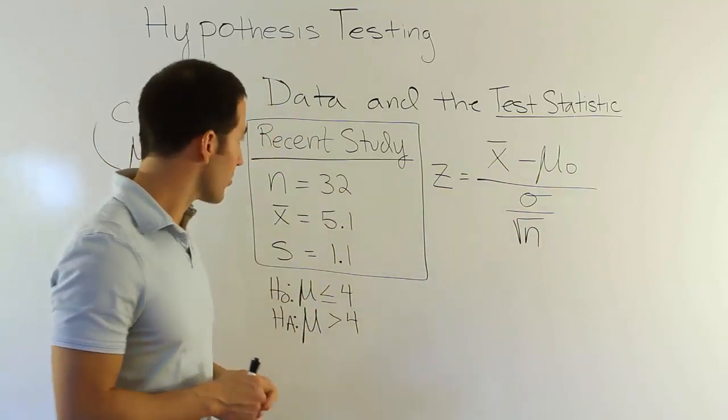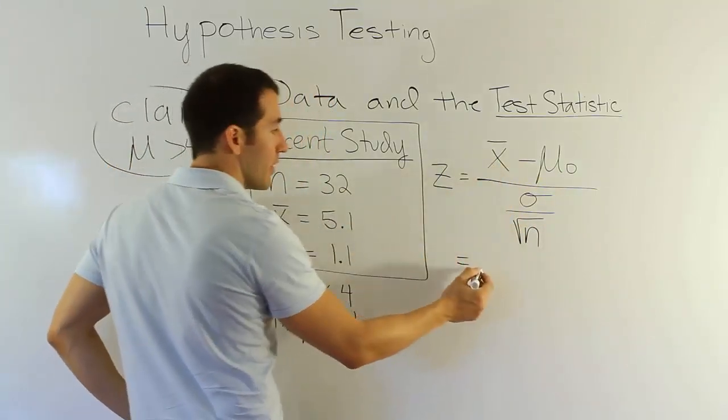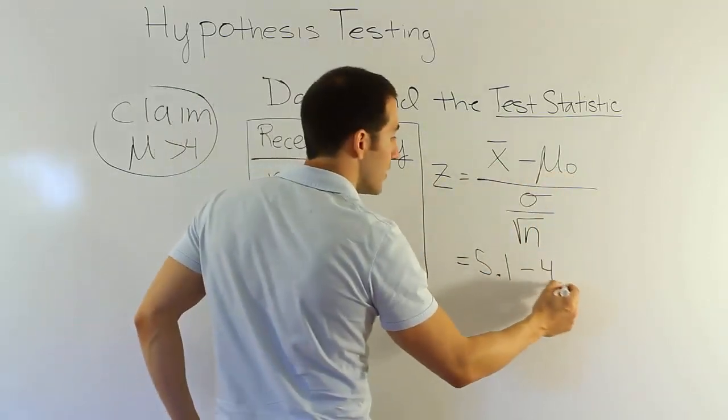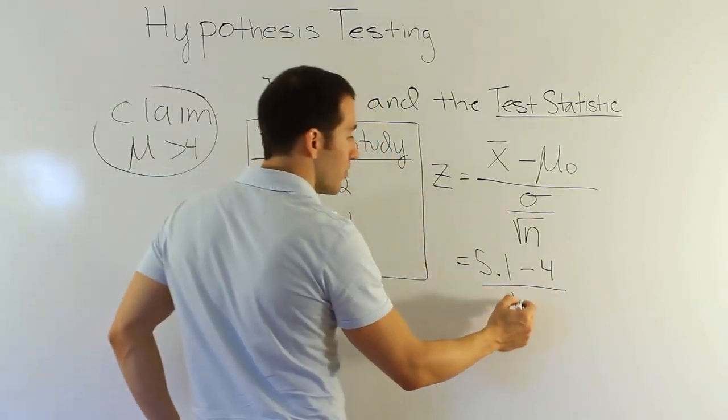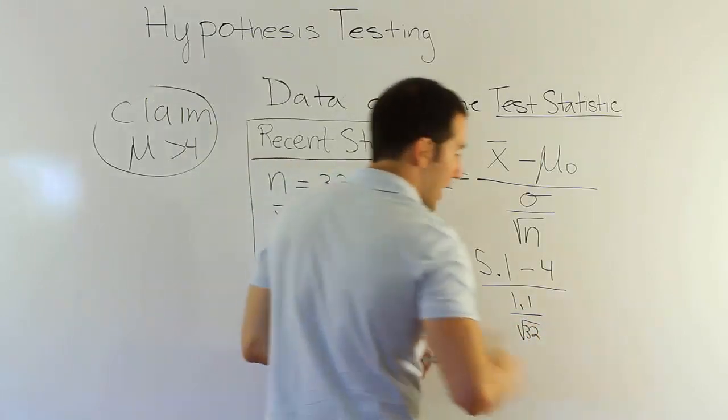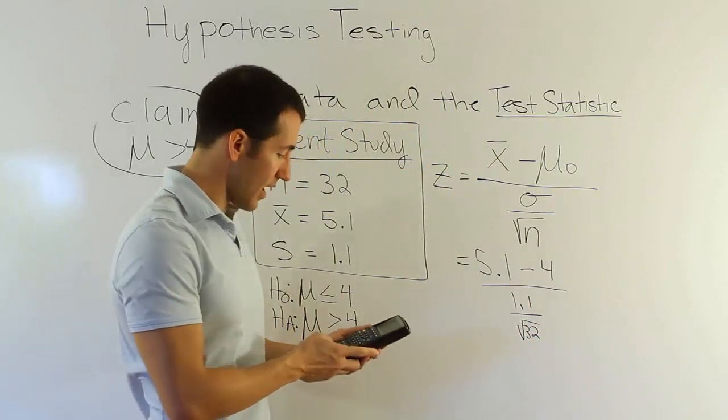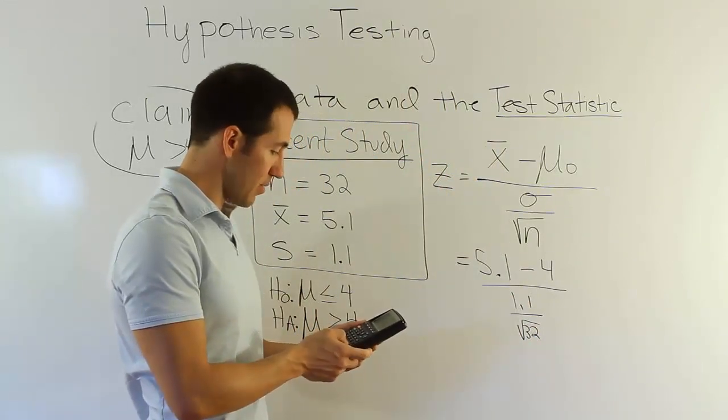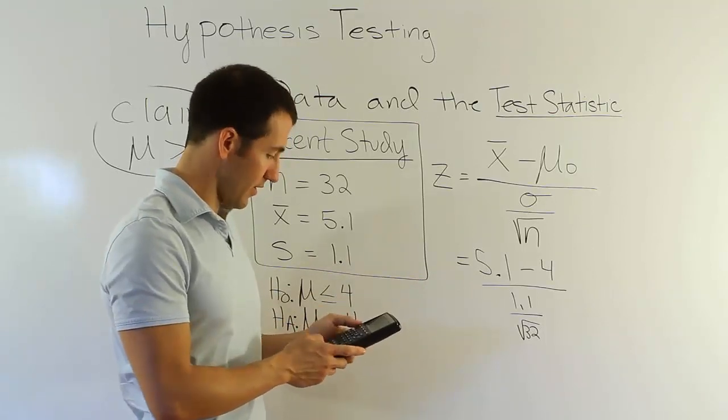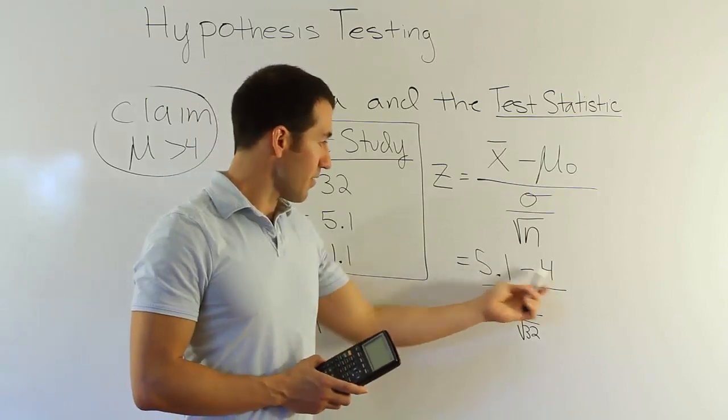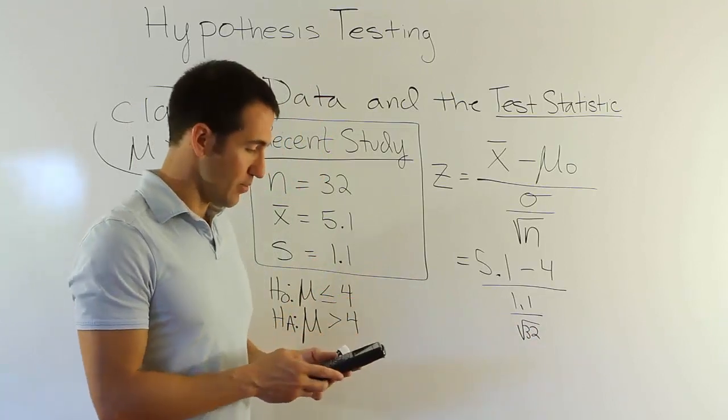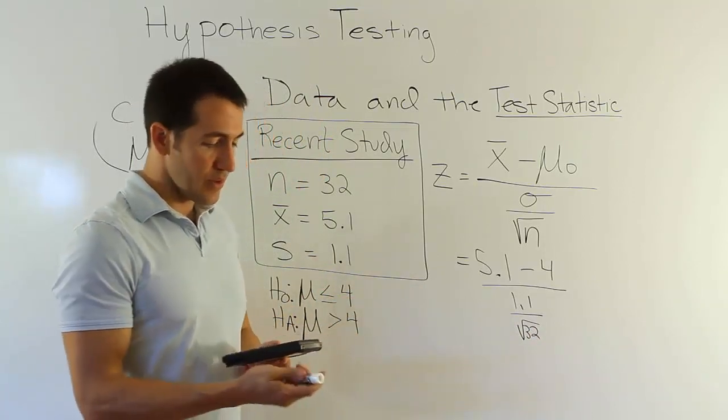Let's calculate that for this particular problem. So in that case, we would have x bar being 5.1 minus the hypothesized mean, which is 4, divided by sigma, which is 1.1 over the square root of 32. And if we do all that, let's see what we get. So the top, of course, becomes 1.1. So let's divide 1.1 divided by 1.1, divided by the square root of 32. So the difference between 5.1 and 4 is 1.1, and we also happen to have the same standard error there. Just pure luck. And when we're done there, we end up with this number.